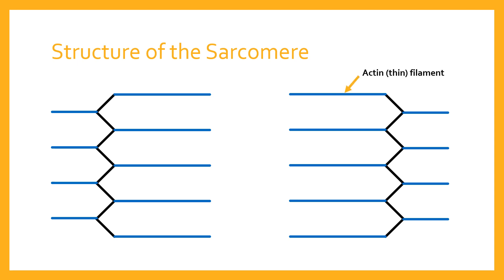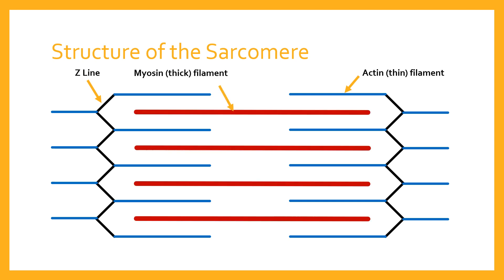The blue lines on screen represent what are known as actin filaments — they're thin filaments. They are attached to either side of the sarcomere to what's known as the Z-line. The Z-line is the anchoring point of the actin filaments, which then extend from the Z-line into the centre of the sarcomere. There are also myosin filaments in between the actin thin filaments, and the myosin filaments are about twice as thick as the actin filaments.